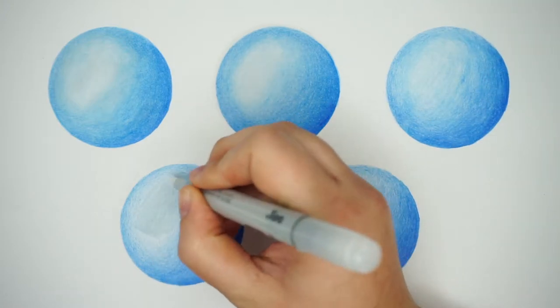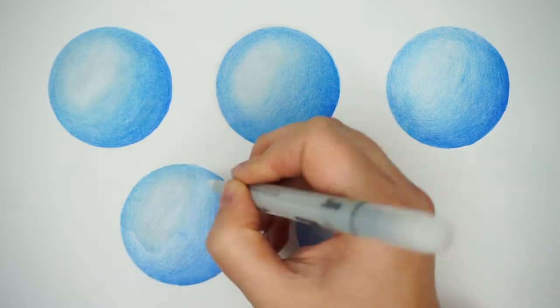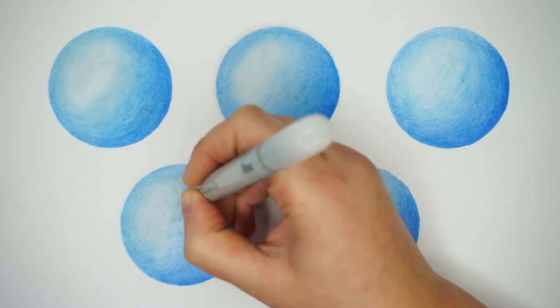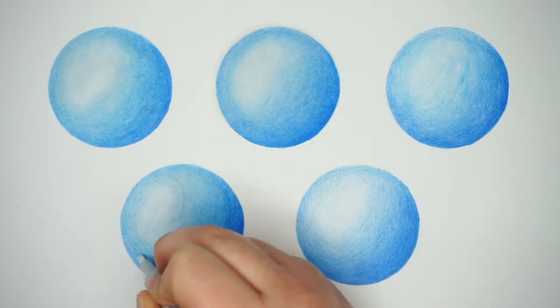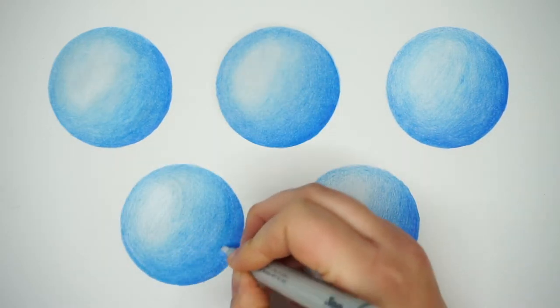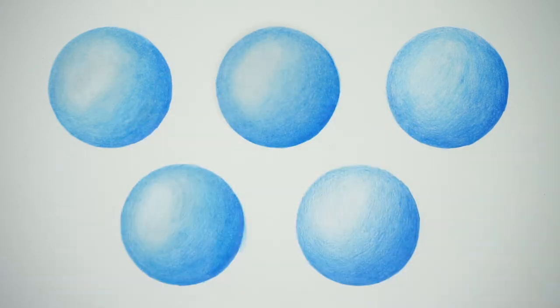Next up is the Copic marker. The Copic marker blended it a little bit but not to the extent of the Zest It. It did go down on the paper very easily and was really easy to use, but as you can see on the tip here, it is very blue and I'm going to have to try and find a way to clean that off.